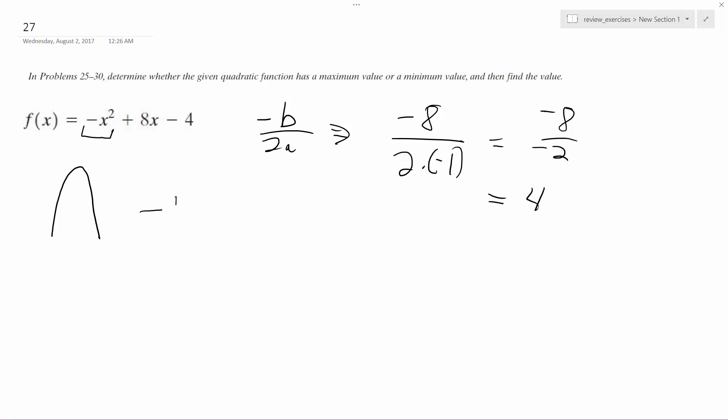Plug in 4, so we get negative 16. The negative is separate from the 4, so we don't have to worry about it canceling out when we square it. Plus 32, 8 times 4, and then minus 4. So this ends up being 16 minus 4, which is equal to 12.